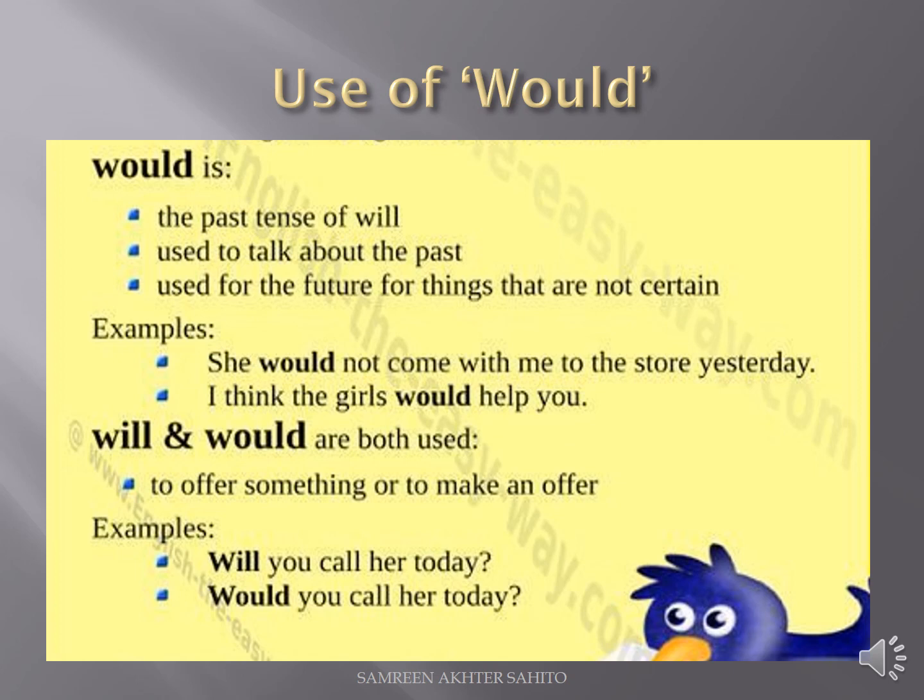Examples of would: 'She would not come with me to the store yesterday' — here would shows past tense. 'I think the girls would help you' — here would shows future tense for an action which is not certain. Will and would are both used to make an offer: 'Will you call her today?' and 'Would you call her today?' — here will and would show offers.